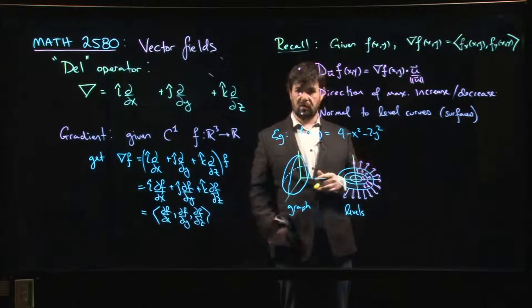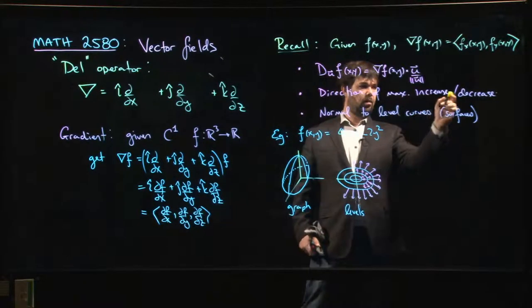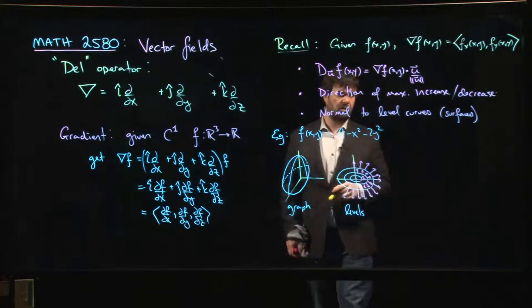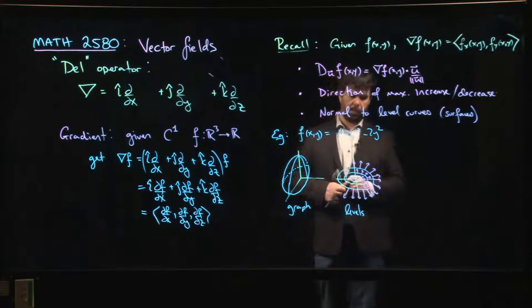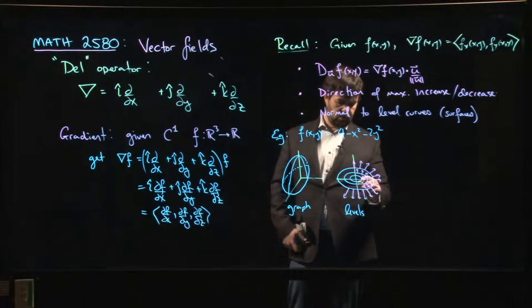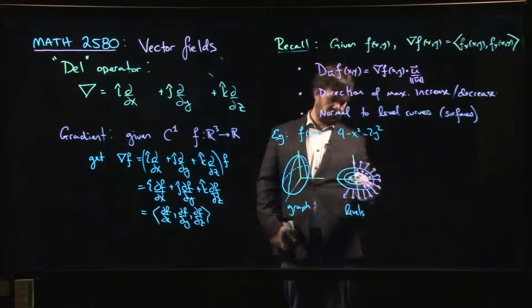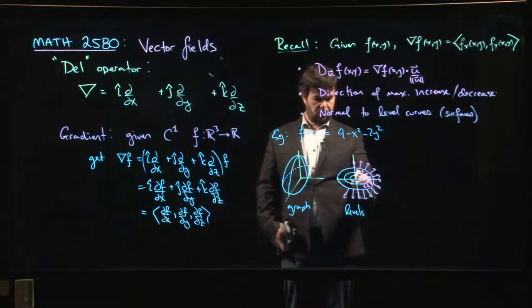And the other thing you can do is you can talk about these gradient flows. You want to find the path of steepest ascent or descent. Well, what you do is you're looking for a path so that it's always tangent to the gradient. So you're looking for paths that follow the gradient vector as you go.